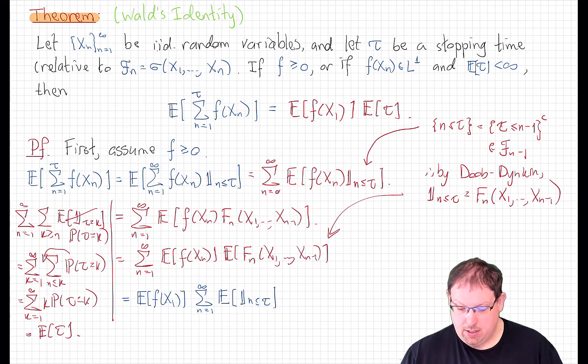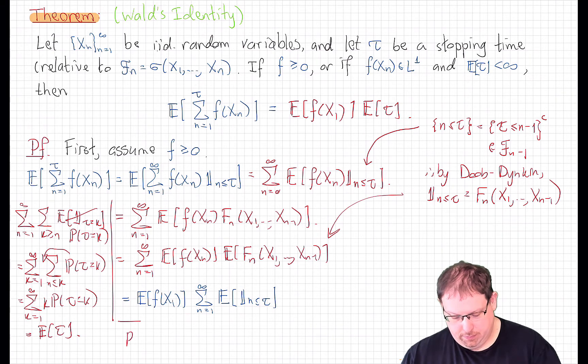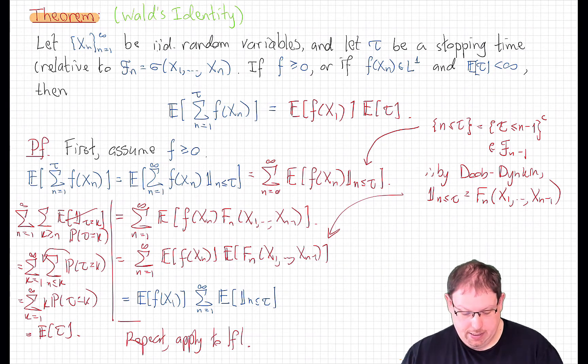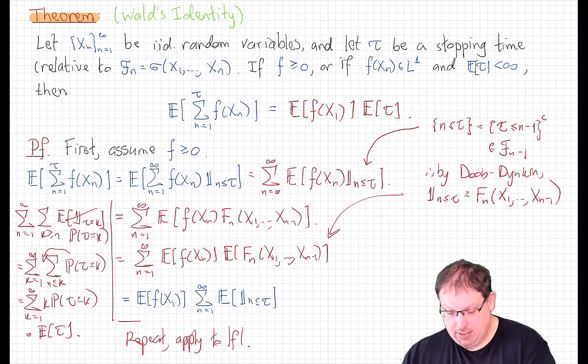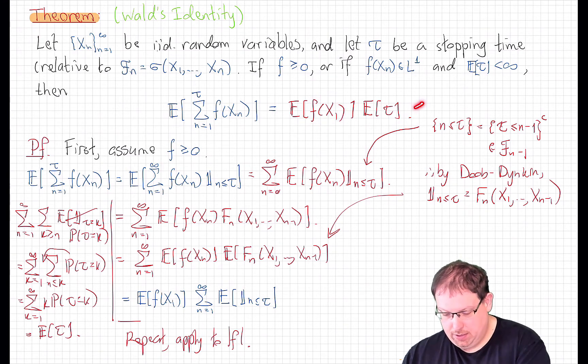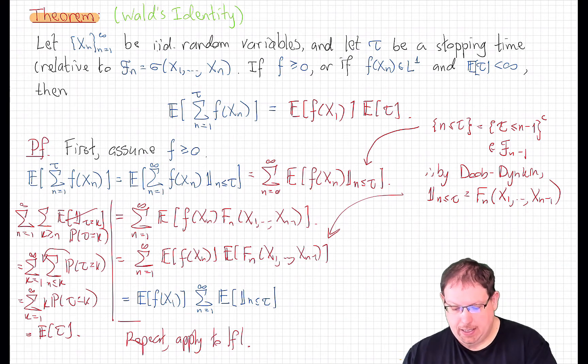Now, in the case where f is not assumed to be non-negative, but we know that these terms are in L1, we can repeat the exact same argument we just went through, but apply to the absolute value of f. And so we'll get all the way down the exact same conclusion, but with an absolute value of f there. And now under the additional assumption that this expectation of the stopping time is finite, since f is in L1, this will be finite, and so this whole thing will be finite. That will allow us to make the same argument one more time without the absolute value, where the only place of concern, this interchange here, is justified by Fubini in this case, instead of Tonelli that was allowed in the positive case. One way or another, we have now proved Wald's identity.